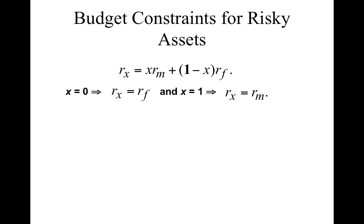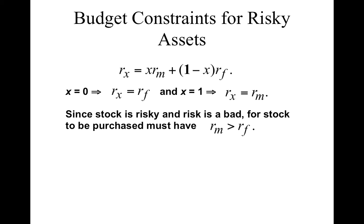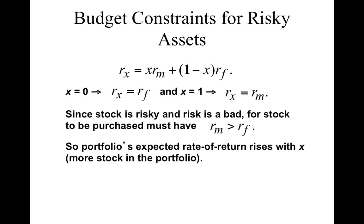Because the stock is risky and risk is a bad, from the way we represented preferences, we must have the mean rate of return on the stock greater than the risk-free rate of return. It is therefore clear that the portfolio's expected rate of return rises with x — that is, with the proportion of money invested in stock.